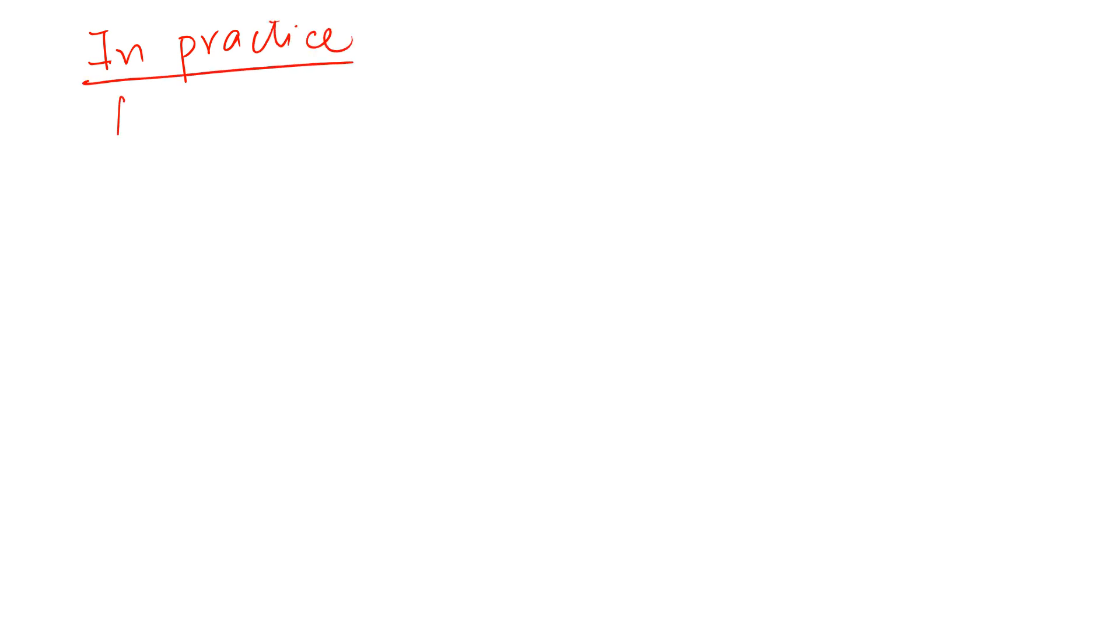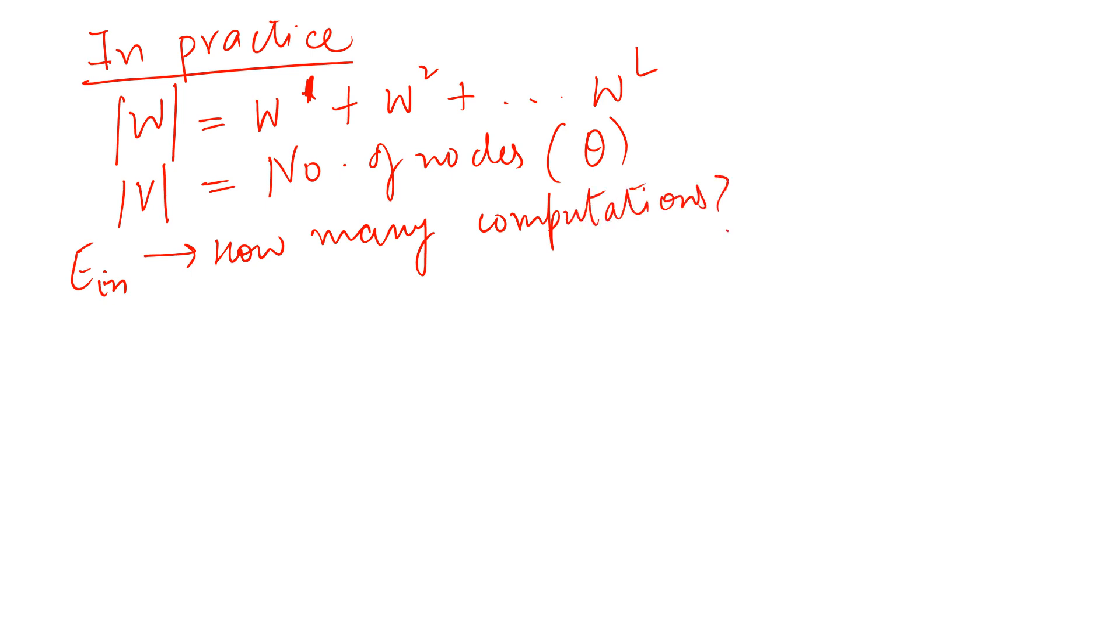So in practice, if we are counting the number of weights or the number of parameters, because this is the number of parameters of my model that I need to somehow get by fitting in the data, these can be specified by adding up these WLs. So maybe W1 plus W2 plus and so on up to WL. And then also let's specify the number of nodes by this V. So this is the number of nodes. Why are these important? Because the computation of my theta takes place at each of these nodes. So now to compute Ein, how many computations? The question arises, how many computations do we need?